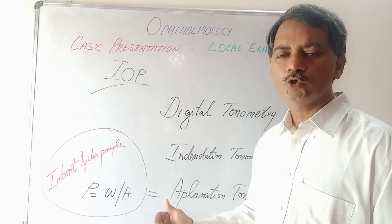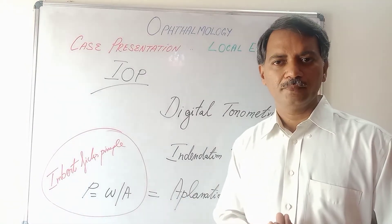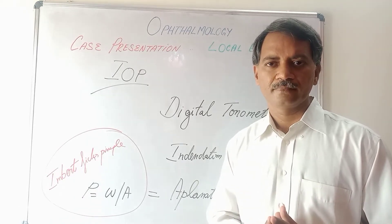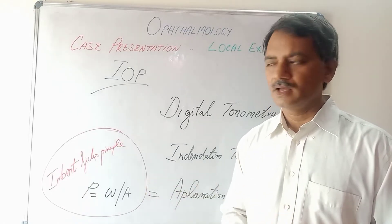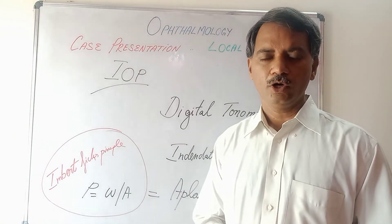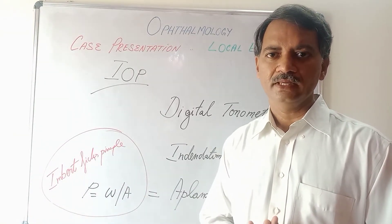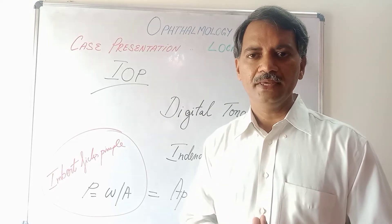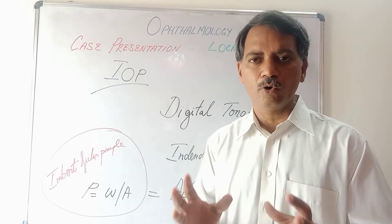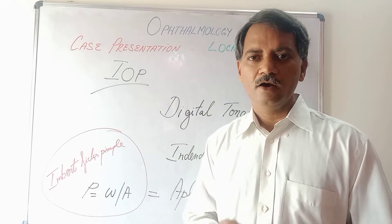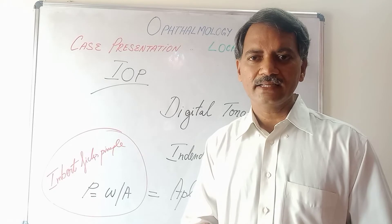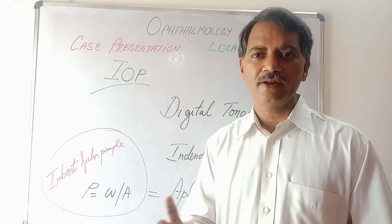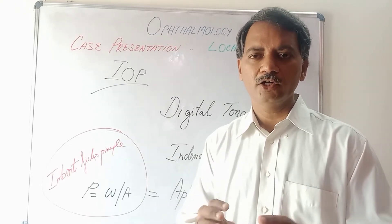Applanation tonometry is very accurate and gives a precise reading of intraocular pressure. It is based on the Imbert-Fick principle: P equals W divided by A, where P is the pressure inside the eyeball, W is the force required to flatten an area of the sphere, and A is the area of flattening. This gives the accurate intraocular pressure.